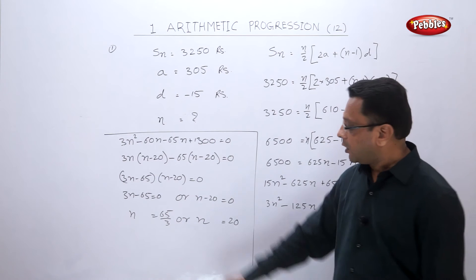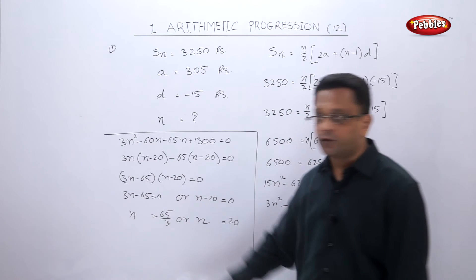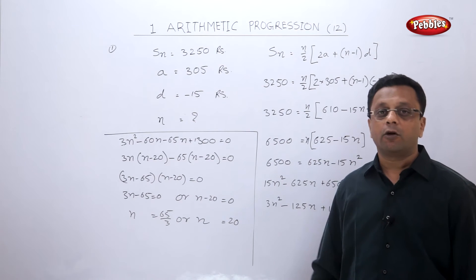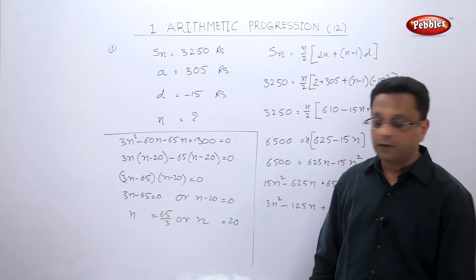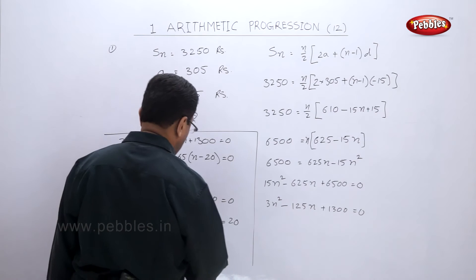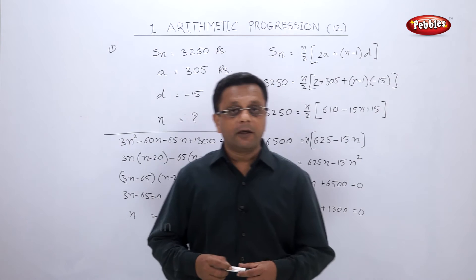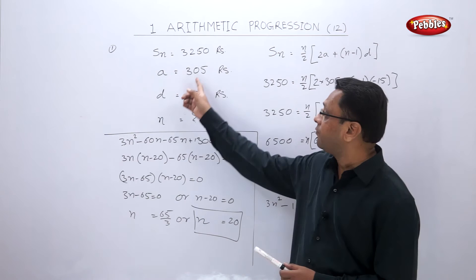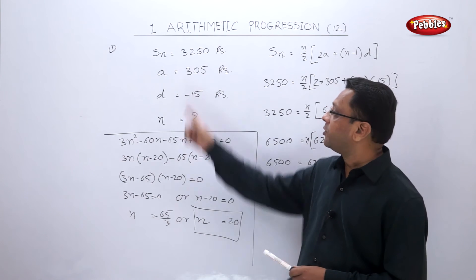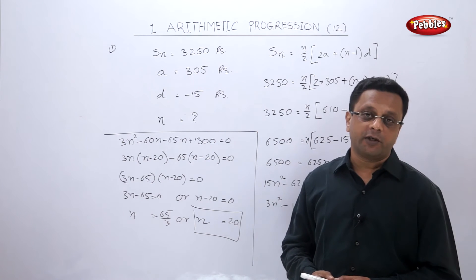If we divide 65 by 3, n comes out as a fraction. Since the number of installments cannot be a fraction, we reject that value. Therefore n is equal to 20 months. He will pay a total of 20 installments, starting with the first installment of 305 rupees.